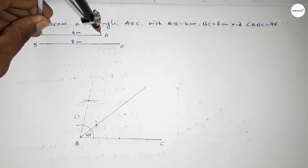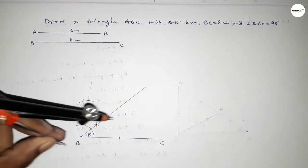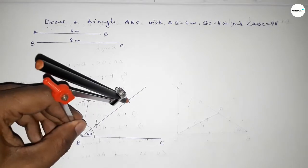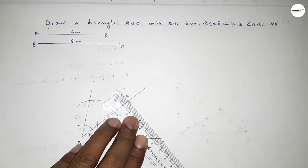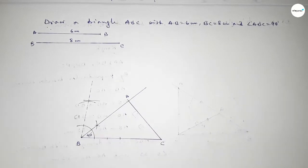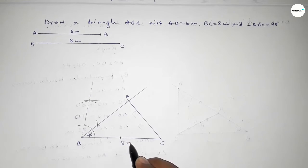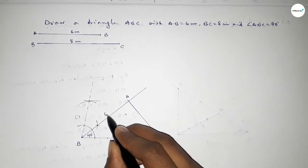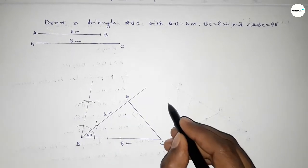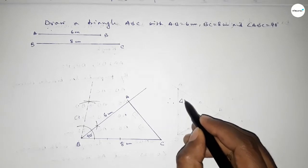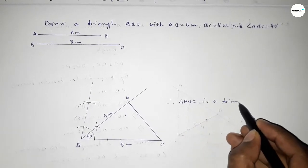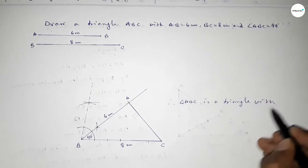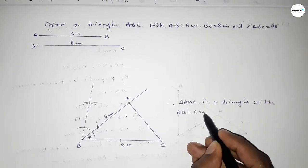Now taking the length AB equal to 6 centimeters using the compass, putting the compass on point B and cutting here, and taking here point A. Now joining A and C to get the triangle ABC. This is 8 centimeters and this one is 6 centimeters.